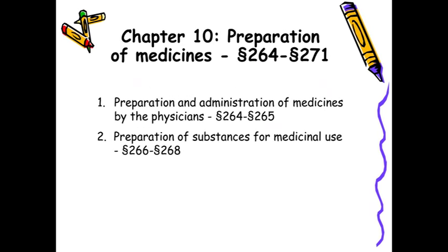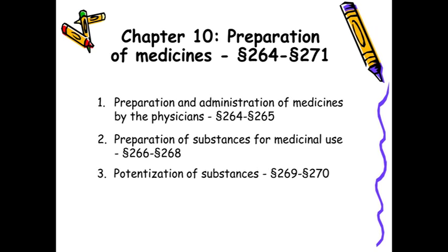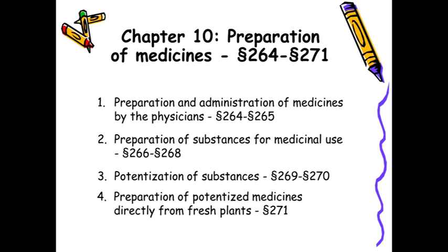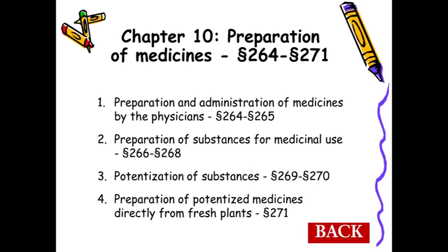Chapter 10 covers preparation and administration of medicine by physicians. Hahnemann was a staunch protagonist that physicians must make their own medicines and it should not be by apothecaries. Preparation of substances for medical use, potentization of substances, and preparation of potentized medicines directly from fresh plants — these are the chapters devoted to pharmacy. Nowadays we are not making these medicines ourselves, but these concepts are very much relevant even today.